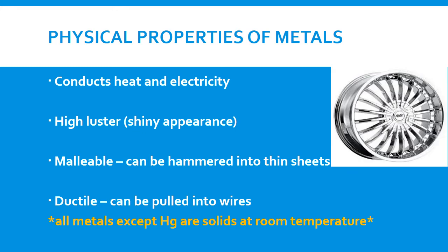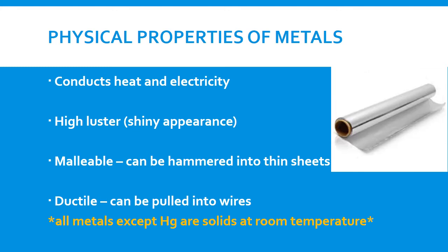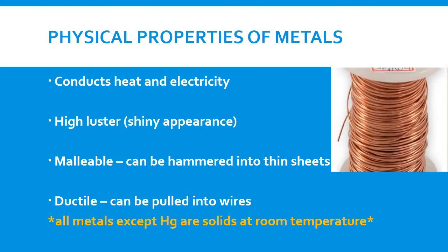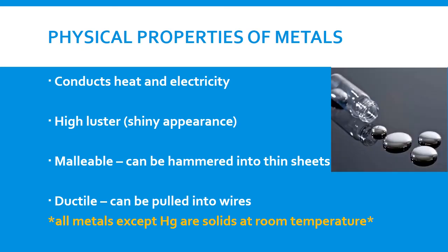They're malleable. They can be hammered into thin sheets. So think of aluminum foil. They're ductile. That means they can be pulled into wires. Think of your metal wires. Now all your metals will be solids at room temperature except mercury, which is going to be a liquid at room temperature.